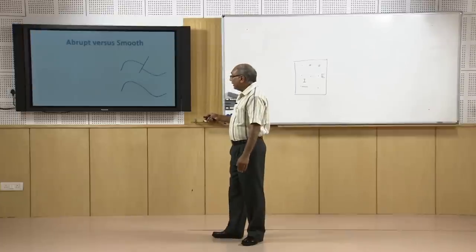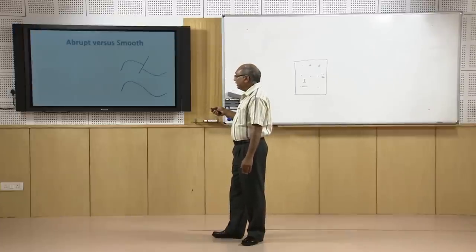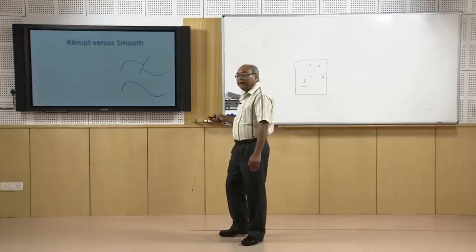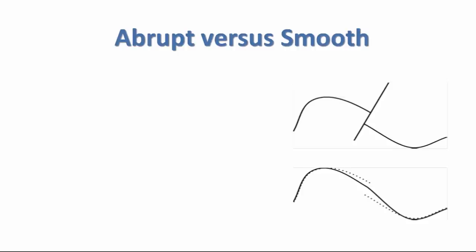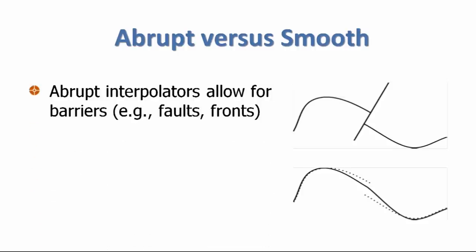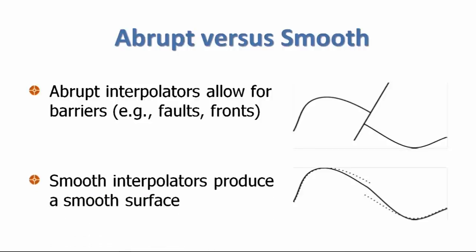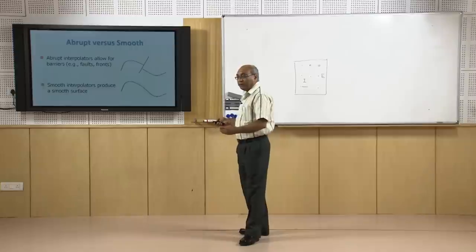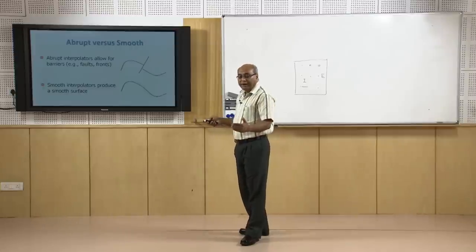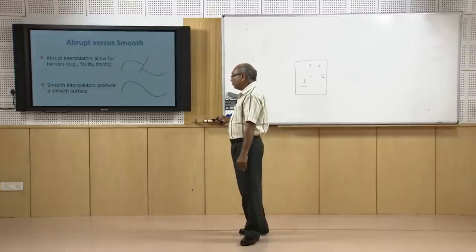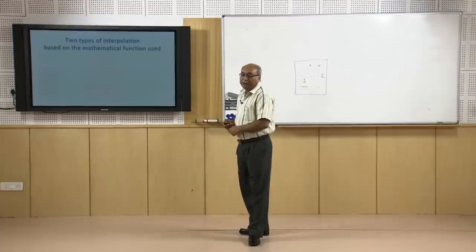Abrupt inputs are allowed in different interpolation techniques. Abrupt interpolators allow for barriers such as faults, fronts, dikes, and reefs. Smooth interpolators produce a smooth surface. Depending on your requirements, the phenomenon, and the terrain conditions, one would choose the appropriate interpolator.